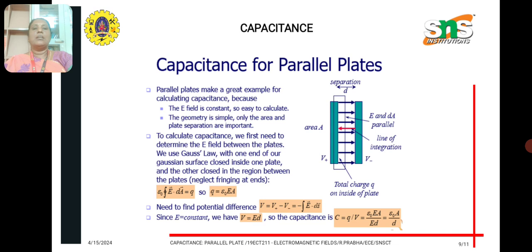Here epsilon_0 is the permittivity of the dielectric, A is the area of the plate, and d is the distance of separation between the plates. From this formula, we understand that the capacitance of a parallel plate capacitor is directly proportional to the permittivity of the dielectric medium and the area of the plate, and inversely proportional to the distance of separation between the parallel plates.